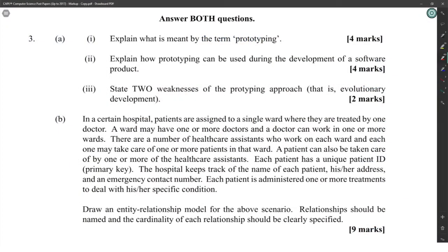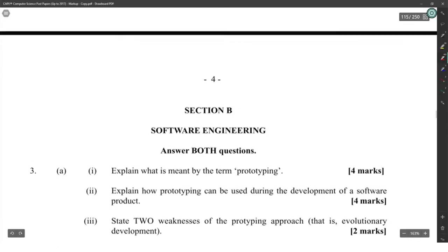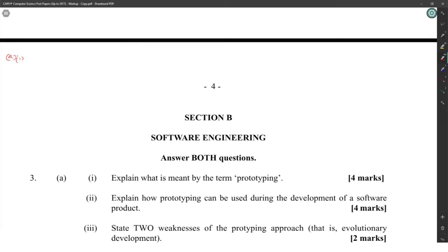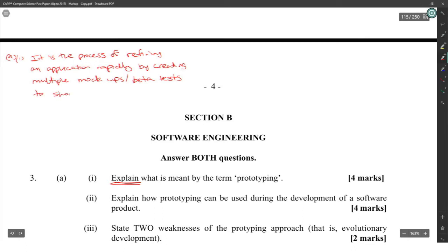Explain what is meant by the term prototyping. Okay, four marks. Nice. All right, so let's break it down into logical parts. We could give examples to kind of work through this. It is the process of refining an application rapidly by creating multiple mock-ups or beta tests to show to the user in an effort to get the user to decide what they want from the application.